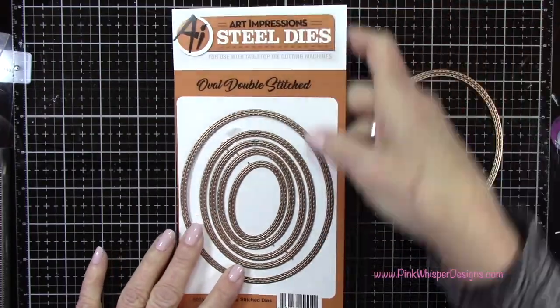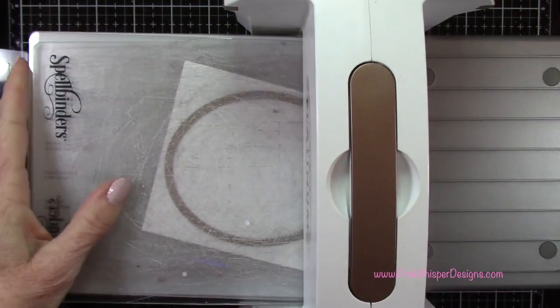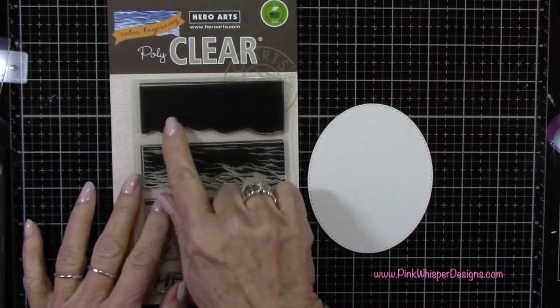With my oval double stitch dies from Art Impressions, I'm going to grab that second largest one, again using the Strathmore Bristol Smooth cardstock.